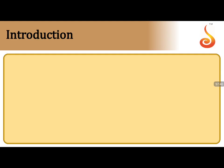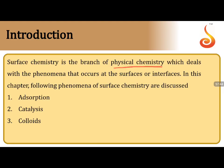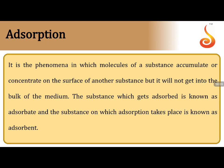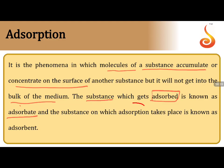Surface chemistry is a branch of physical chemistry dealing with phenomena occurring at surfaces or interfaces. Three phenomena are studied: adsorption, catalysis, and colloids. Adsorption: molecules accumulate on the surface without going into the bulk. The substance that gets adsorbed is called the adsorbate; the substance on which adsorption takes place is called the adsorbent.